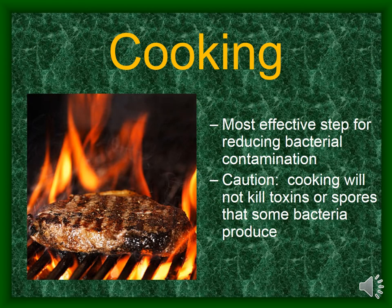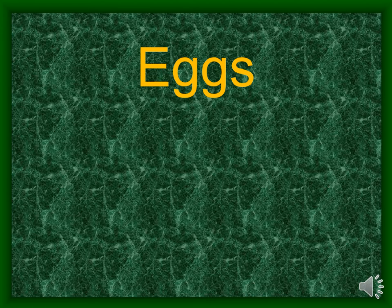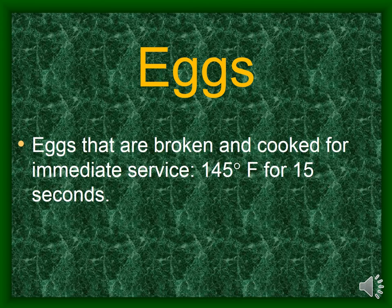Cooking is the most effective step we have for reducing bacterial contamination on raw products. However, cooking will not kill toxins or spores that some bacteria produce. The first set of temperatures is for raw eggs. Eggs that are broken and cooked for immediate service must be cooked to at least 145 degrees Fahrenheit for at least 15 seconds.